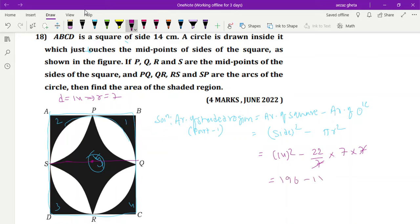196 minus 22 into 7, 154. 196 minus 154, 42. 42 centimeter squared is part one.